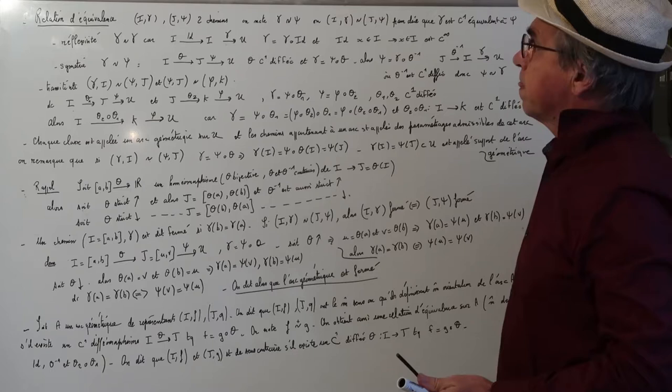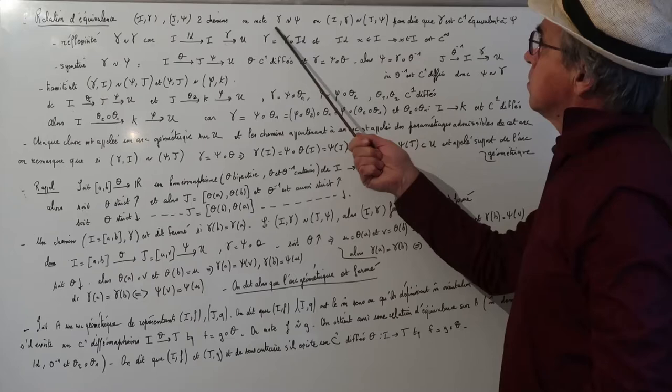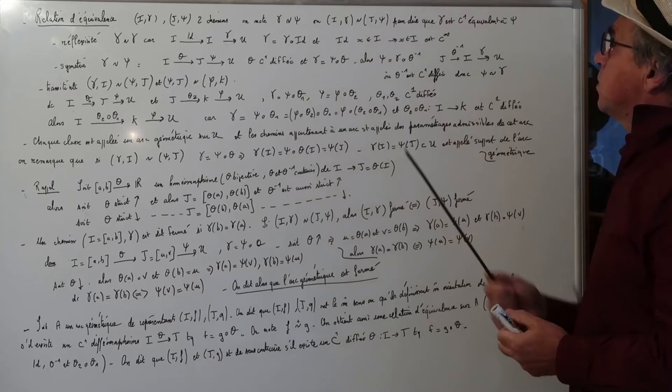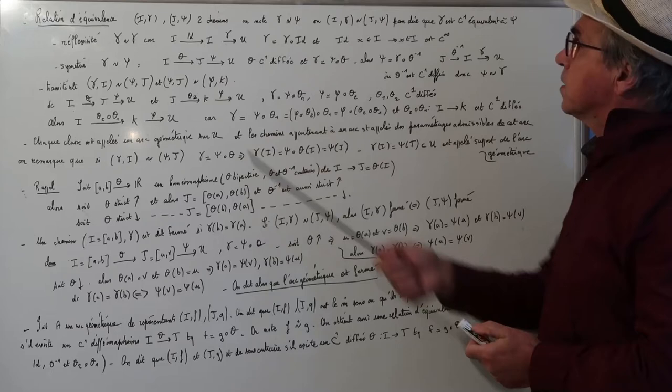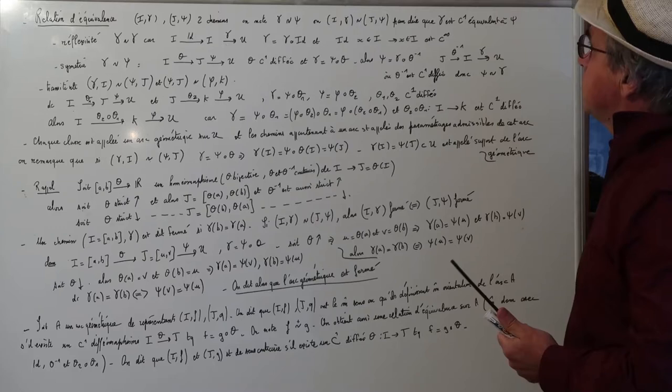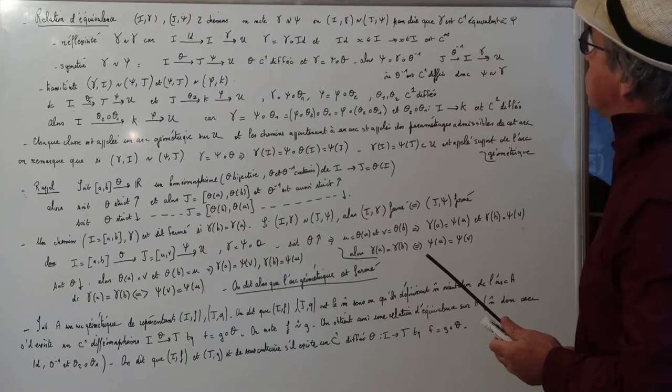Relation d'équivalence : on a deux chemins Iγ et Jψ, et on note γ équivalent à ψ pour dire que γ est C1-équivalent à ψ. Réflexivité : γ est équivalent à γ car si on considère l'identité de I, on a γ égale à γ rond identité, et l'identité est un C1-difféomorphisme de I.